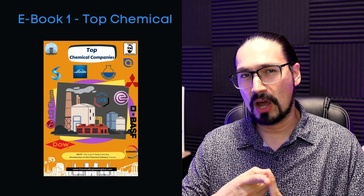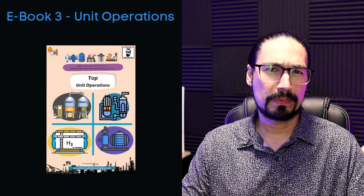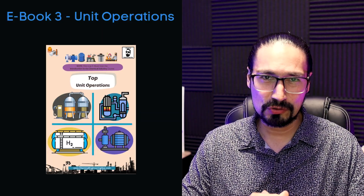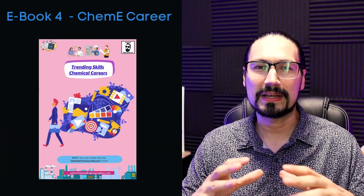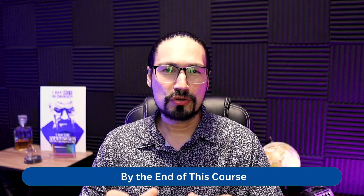And of course, all this is backed up with video lectures, but more importantly, with downloadable material — slides, PDFs, diagrams, images, Q&A, and companion e-books. I'm talking about top chemical companies and their stats, all chemical productions, top unit operations used in the process industries, and trending skills for the chemical engineer.